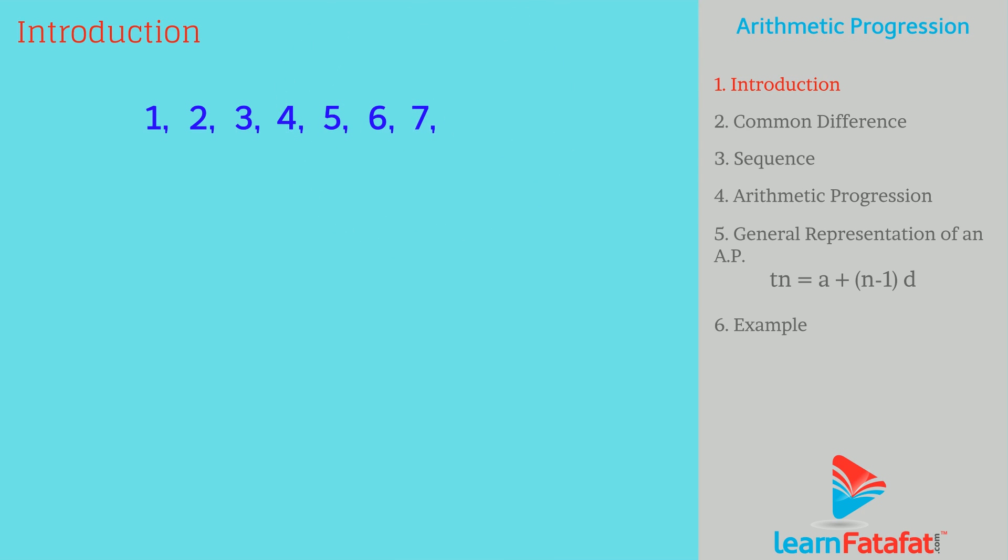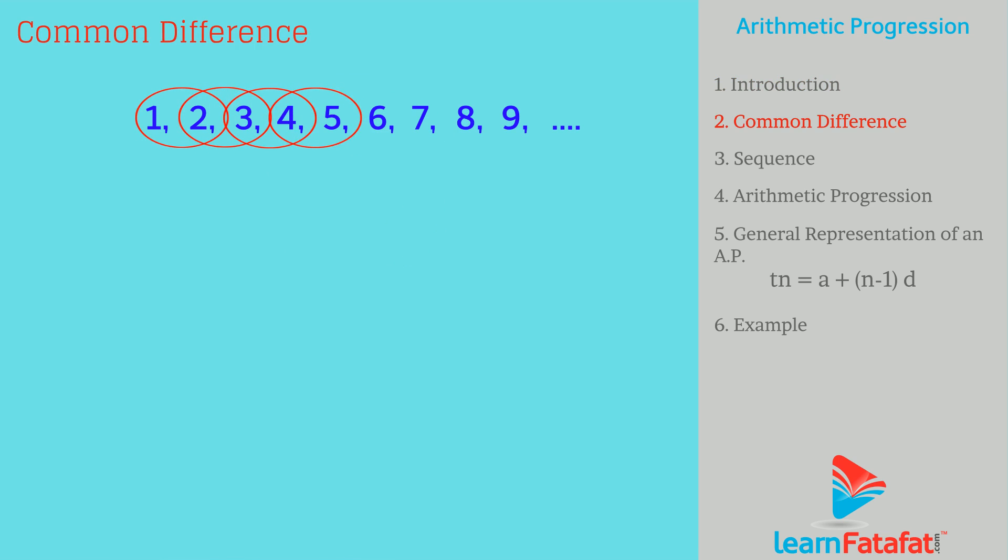Yes, these are 7, 8, 9 and so on. How do you find all these terms? Firstly, you understood the relation between terms of the group and then you applied the same relation to find the next terms.